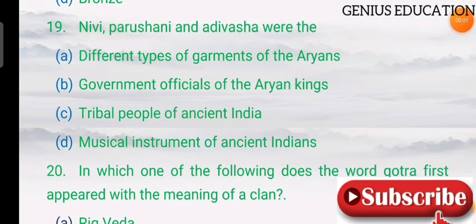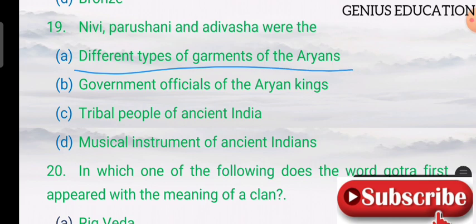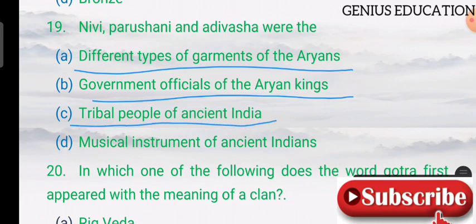Question 19: Nivi, Paridhana, and Adhivasa were — options are different types of garments of the Aryans, government officials of the Aryan kings, tribal people of ancient India, and musical instruments of ancient Indians. The answer is A — different types of garments of the Aryans.